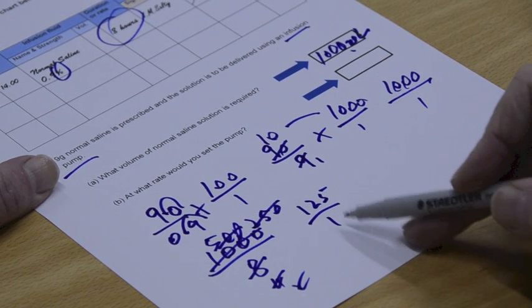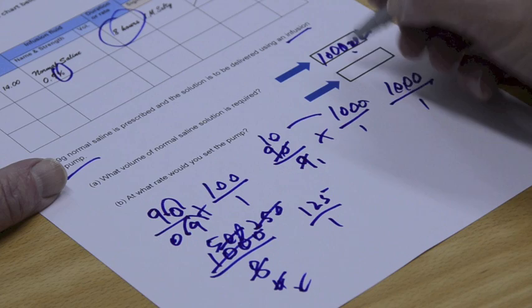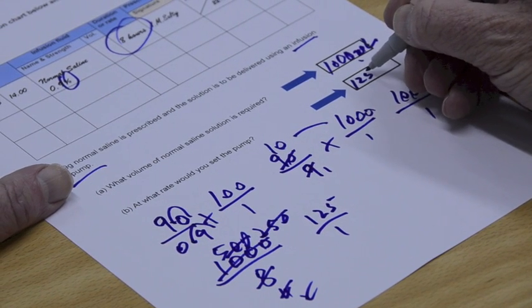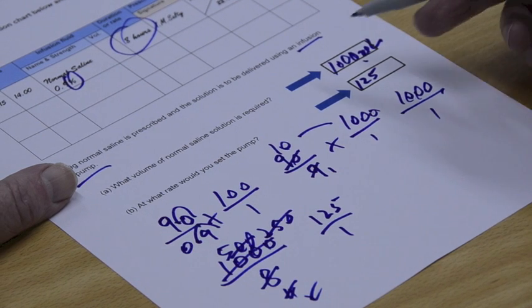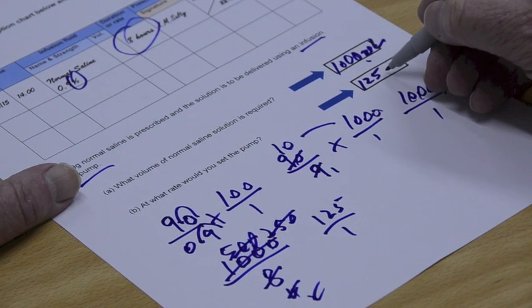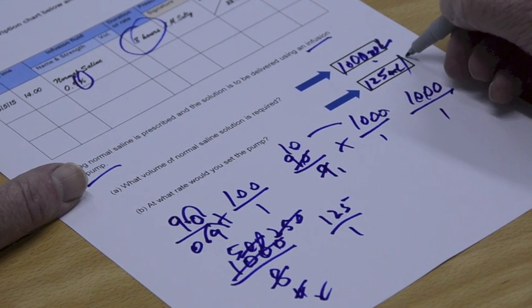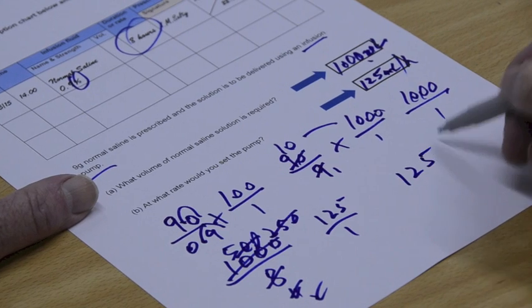So you've actually got the answer here anyway. And it's 125, but what? 125 watt, and this is where you could lose marks, by not putting the units in. Don't forget, it's the pump. Again, so we're 125 mils per hour. If that isn't very clear, I'll put it there again.